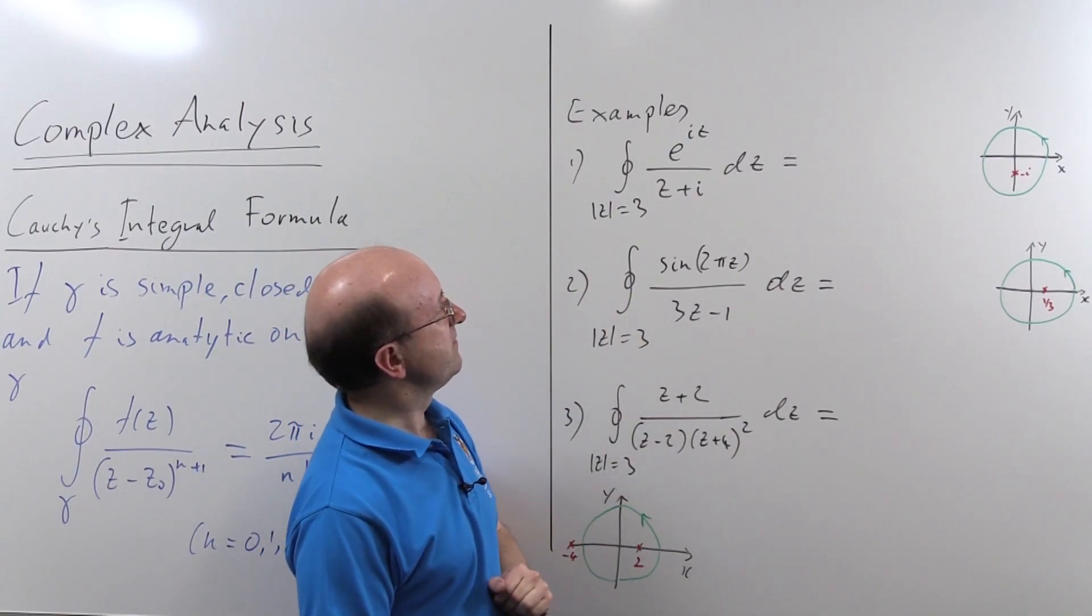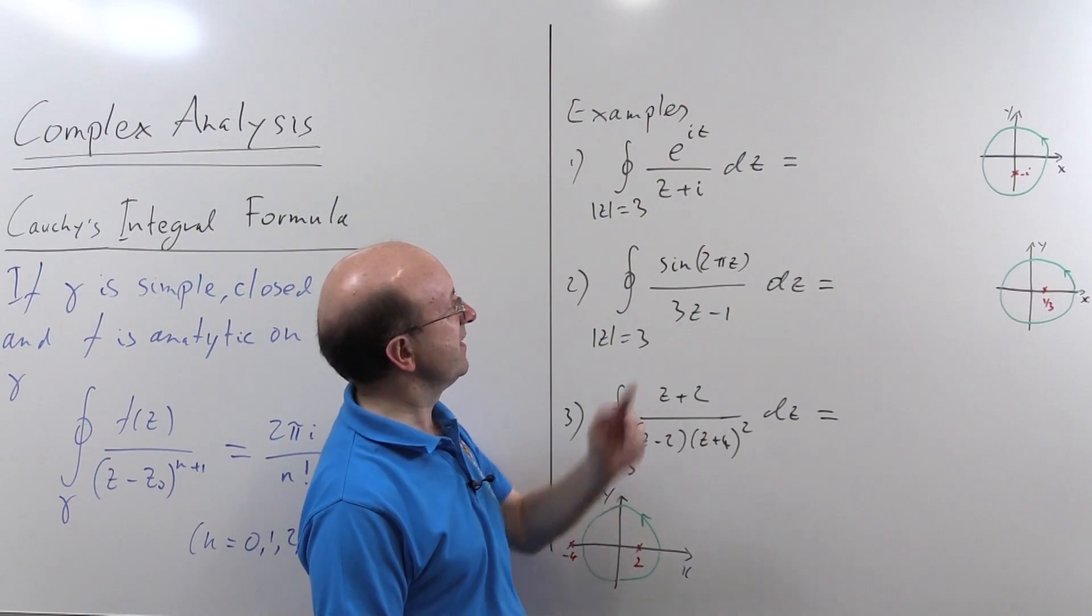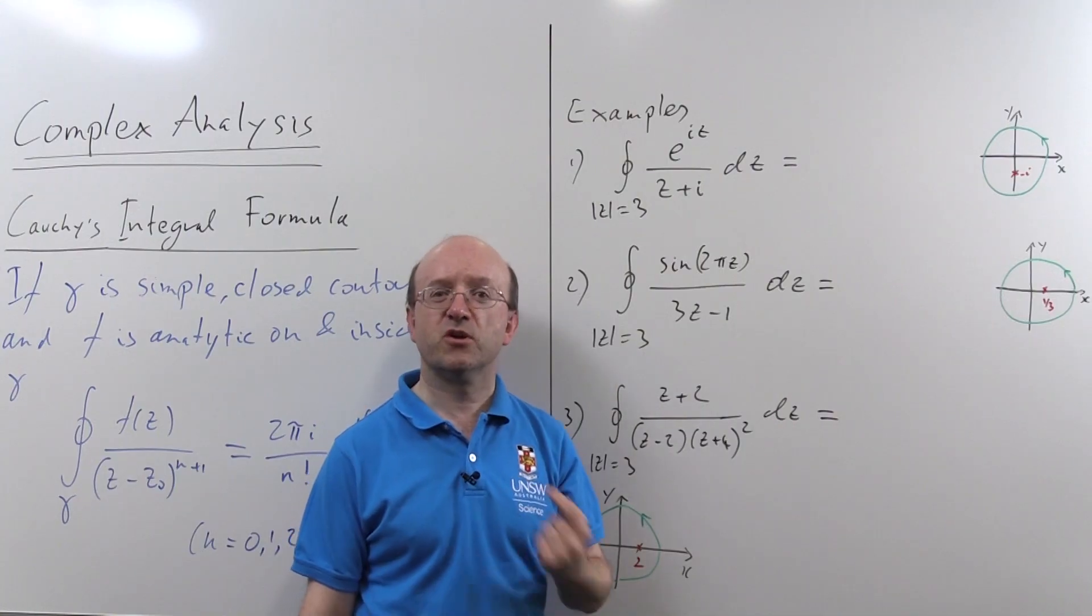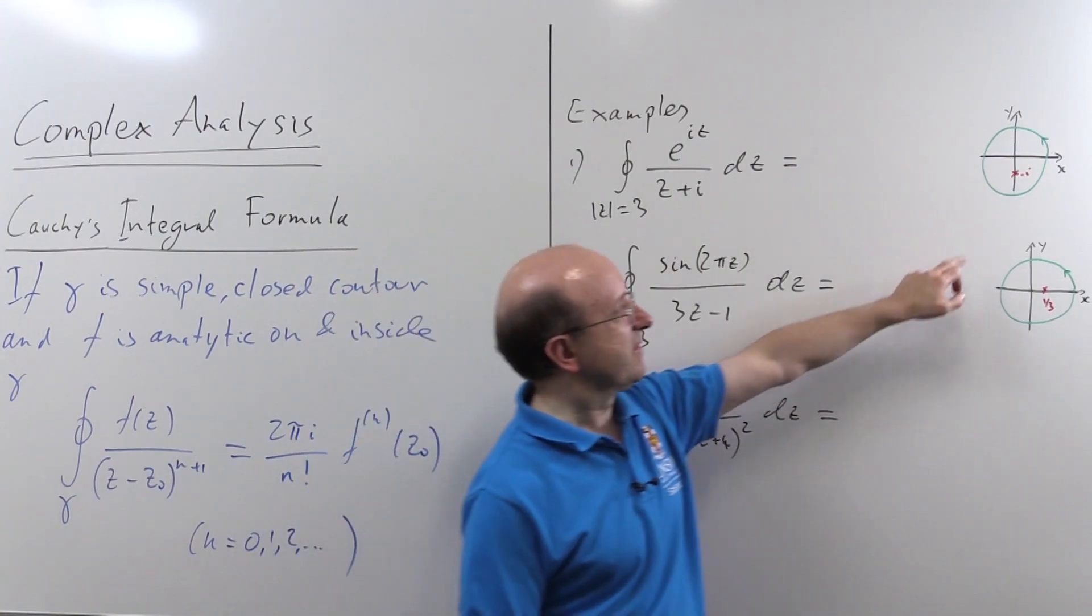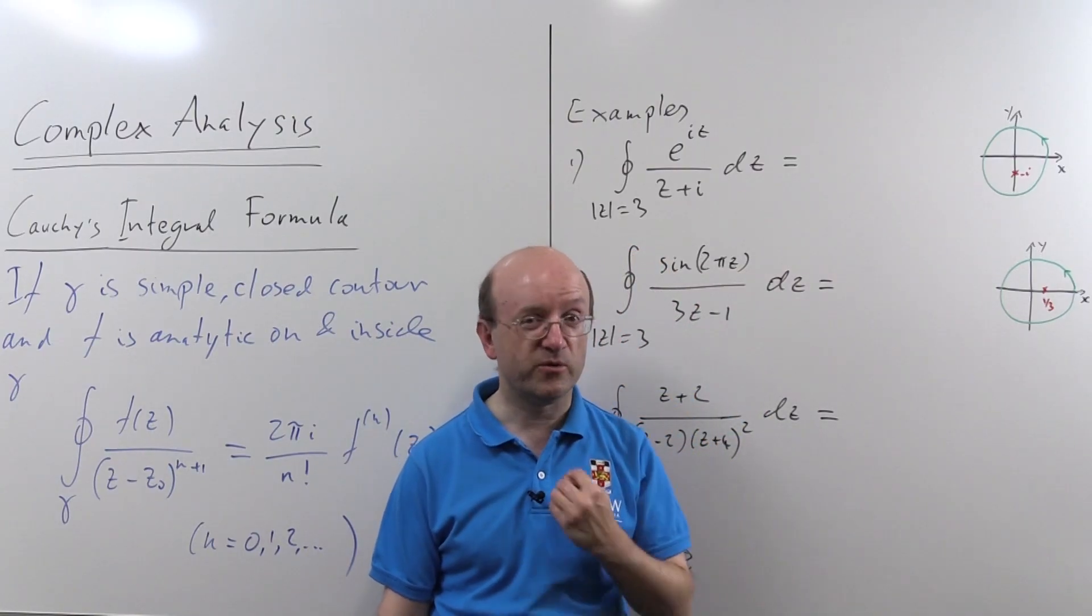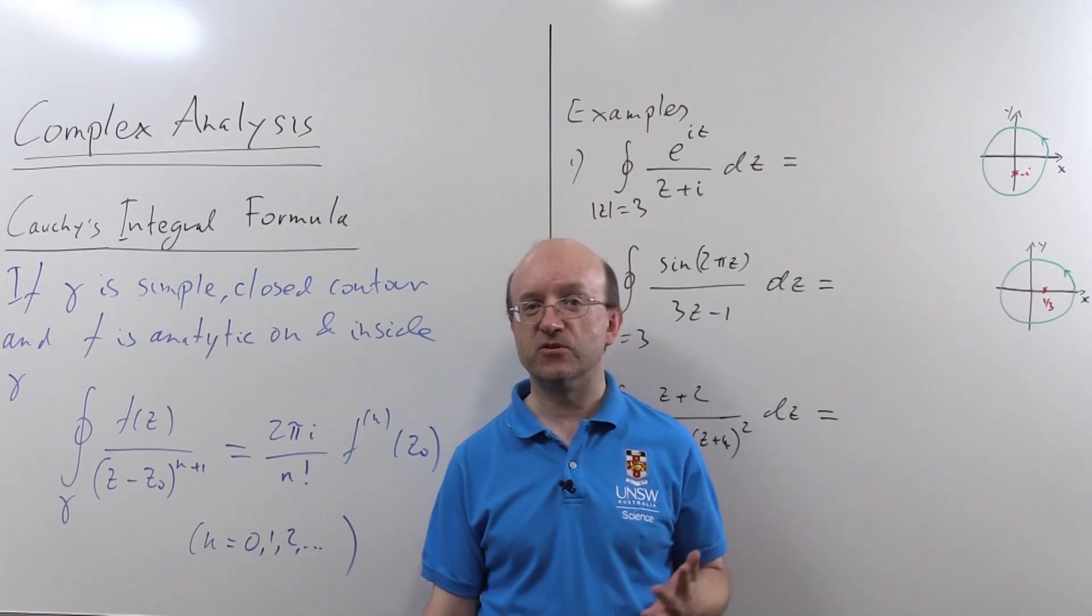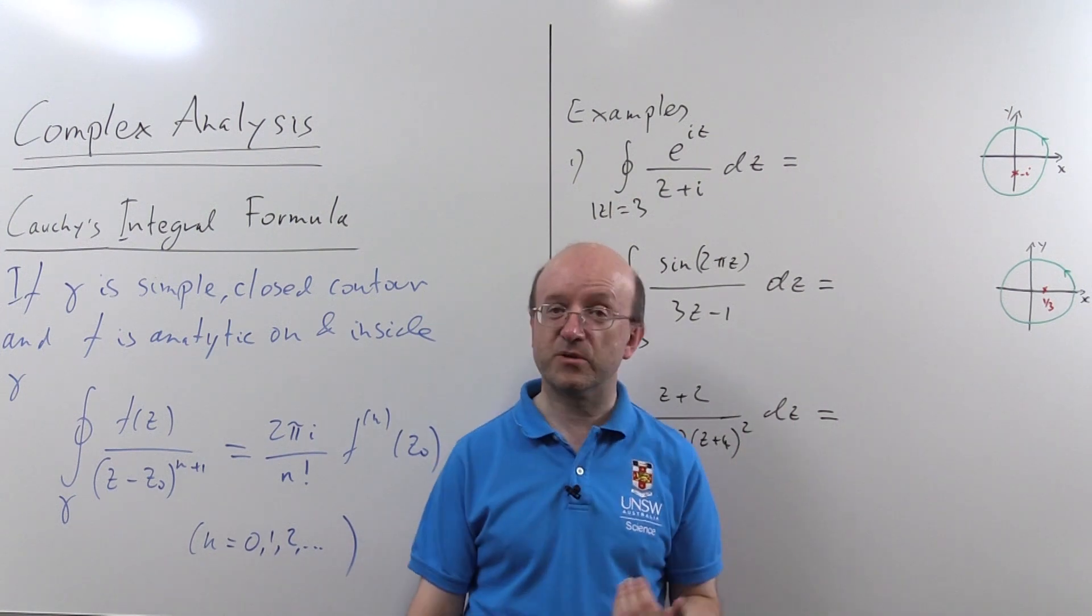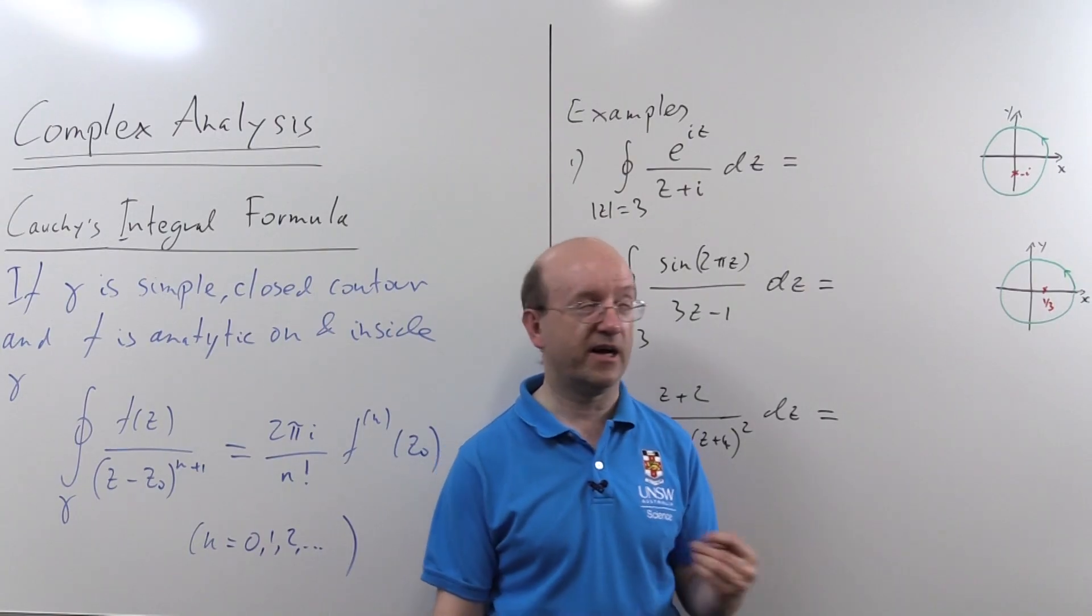Now the first one is a very simple one. The integral e to the iz over z plus i around the contour mod z equals 3, assumed to be taken once positively. In other words, anti-clockwise. Well, I've also drawn up a little diagram here. And my advice to you is always draw a diagram of the contour and the singularities before you do anything like these integrals. OK, these ones are very simple, but it pays to always do it, so you know exactly where the singularities are.